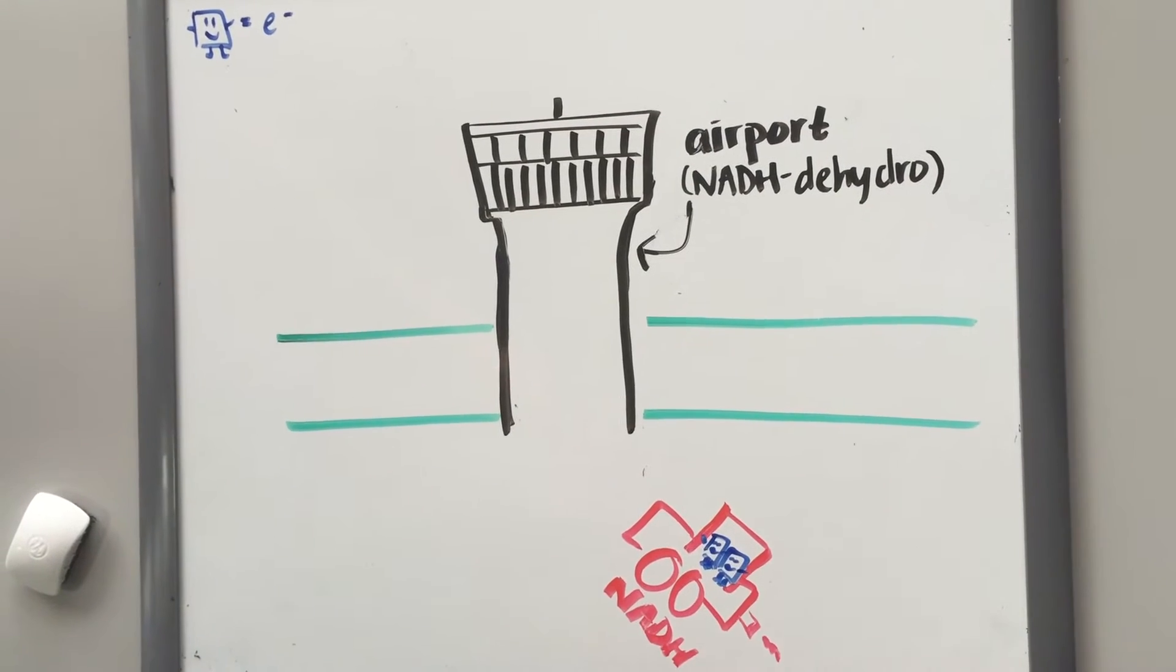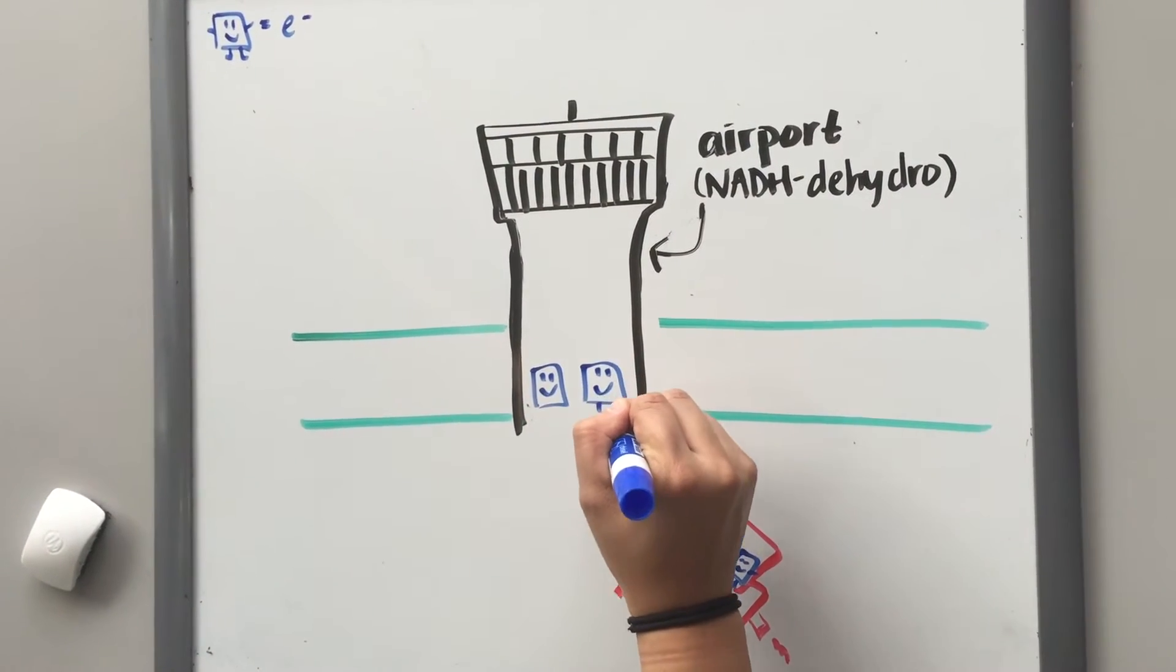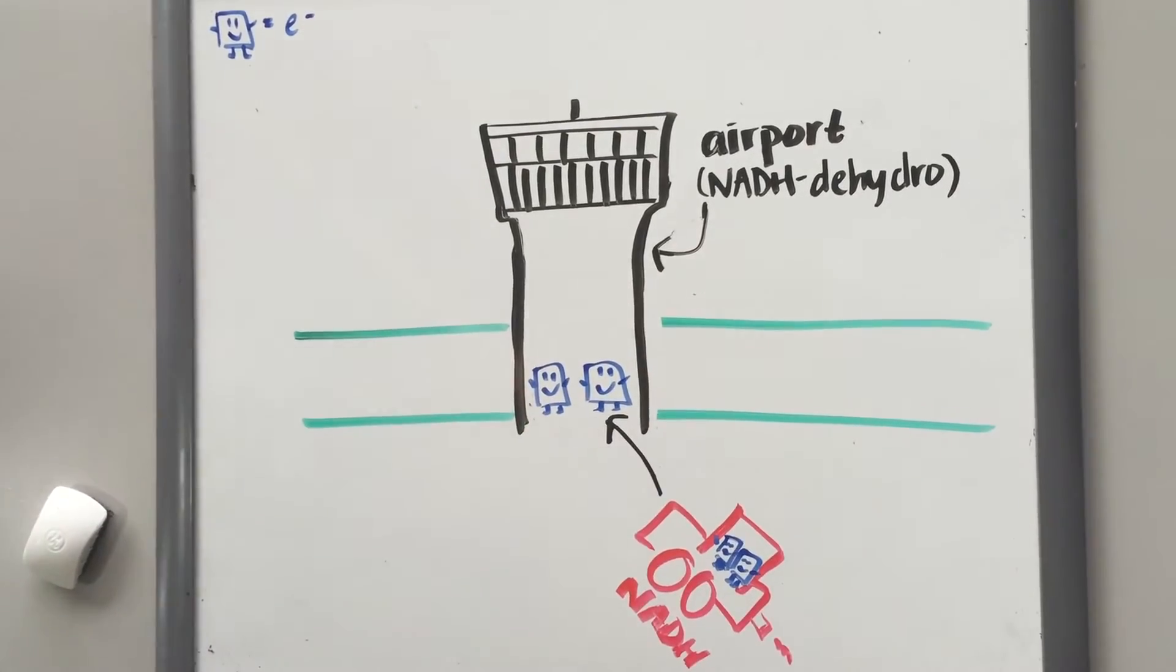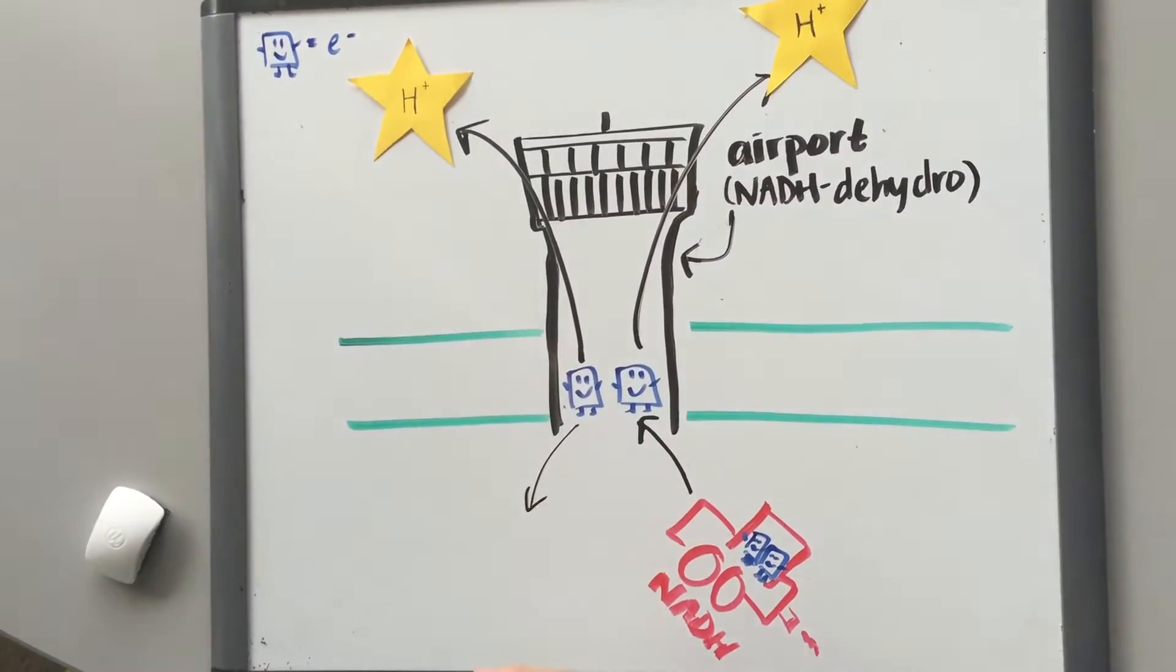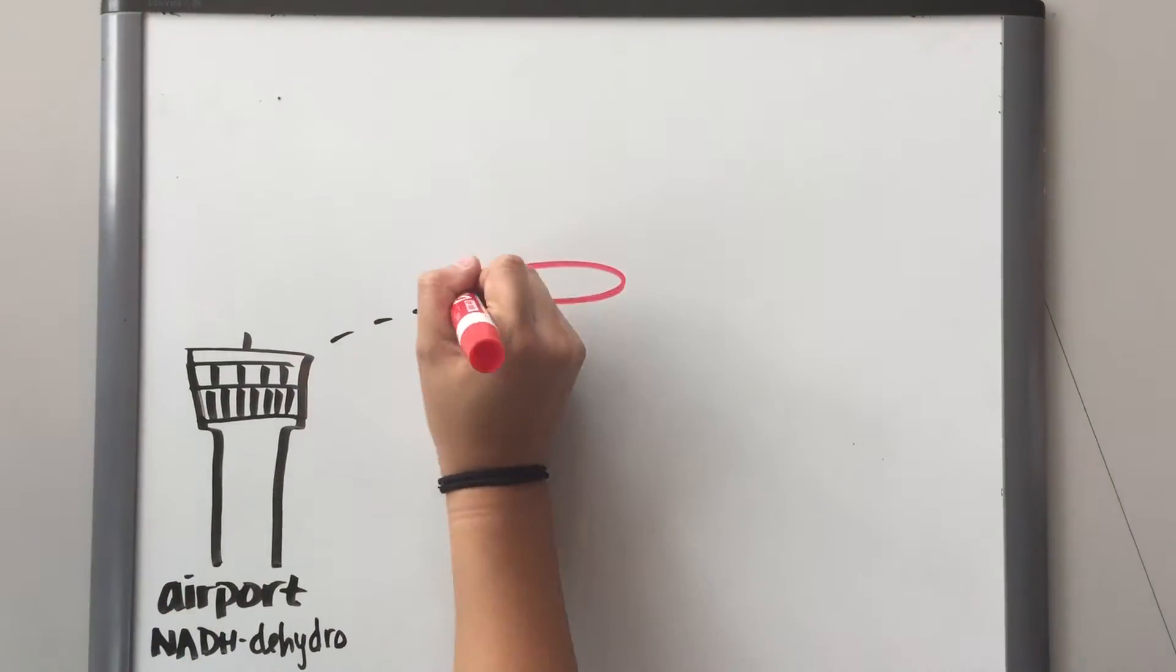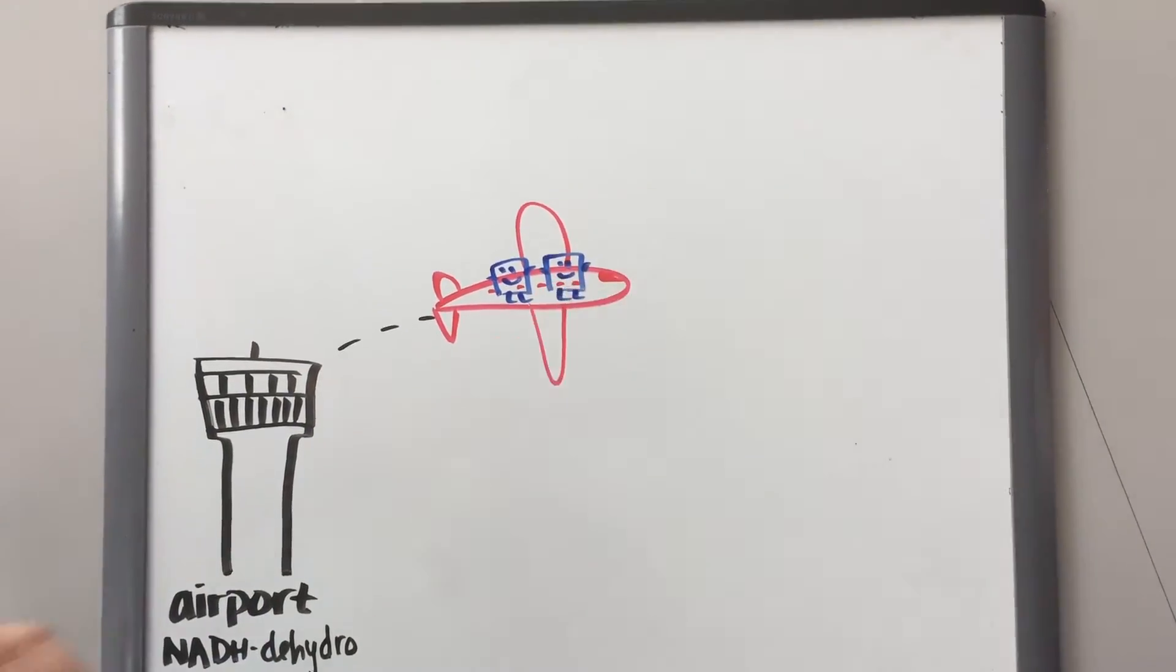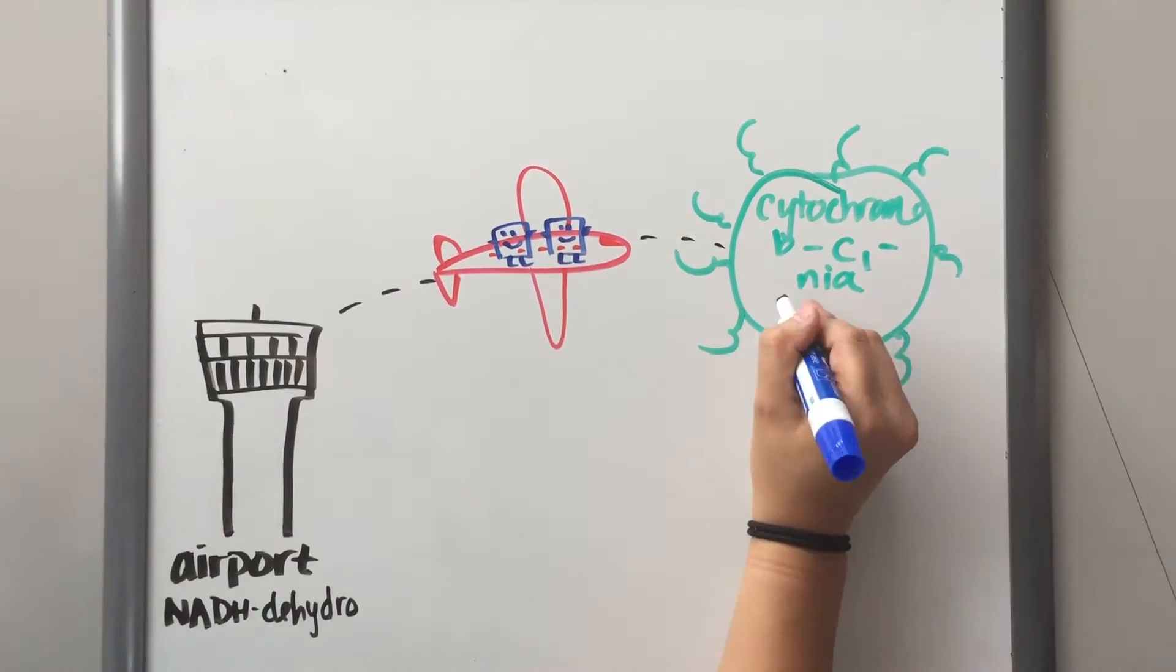NADH carries two electrons and transports them to the NADH dehydrogenase. Once NADH loses two electrons, it is oxidized to NAD+. As the electrons reach the NADH dehydrogenase, they each release a hydrogen ion across the membrane. Then the two electron squares travel from NADH dehydroairport to cytochrome BC1-nea via Air Ubiquinone Airlines.